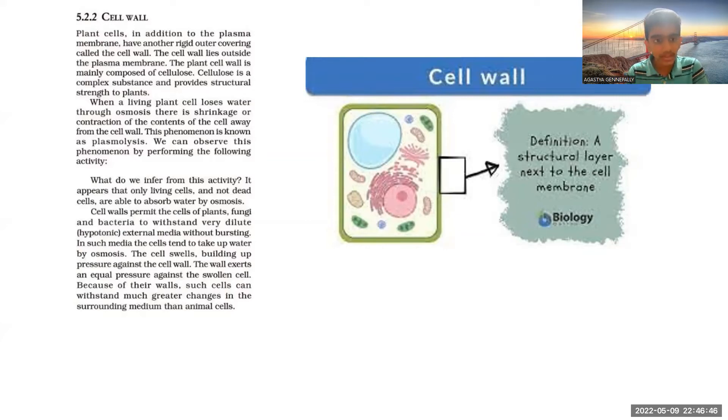It's only in plant cells we call it plasmolysis. The cell walls permit the cells of plants, fungi, and bacteria to withstand very dilute hypotonic external media without bursting.